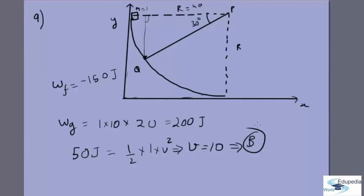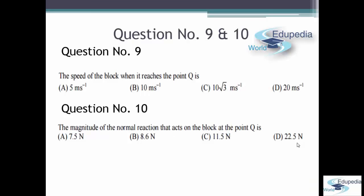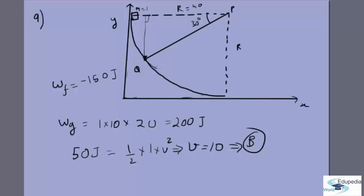Let's look at the tenth question: what is the normal reaction at Q? Now we know V is 10, so we can write the equation in this direction. We know the acceleration in this direction. We don't know acceleration in the vertical direction, but we do know it in this radial direction.